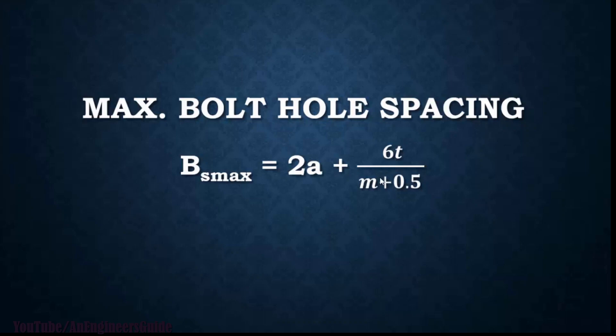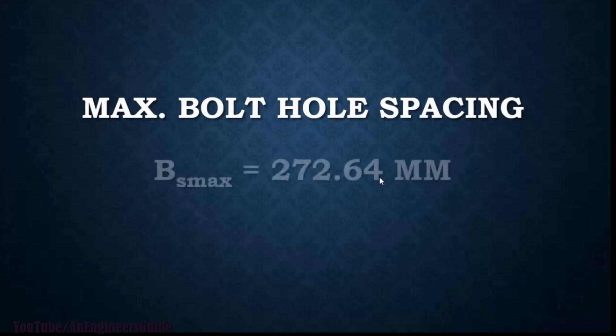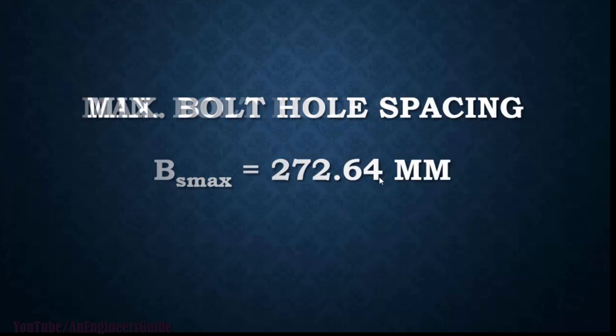We have all the data with us. Now just calculate BS max: 2 into 31.75 plus 6 into 122 divided by 3 plus 0.5. The maximum bolt hole spacing is 272.64 mm. Hope you remember that we calculated in PVElite that 272.64 mm.